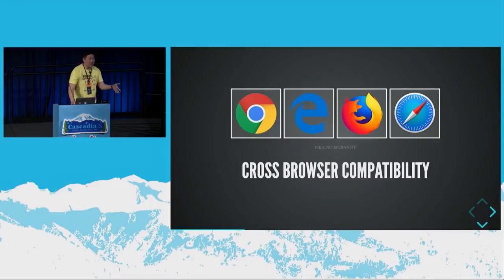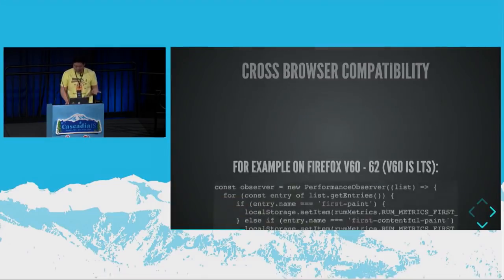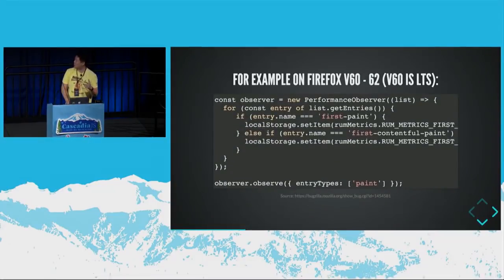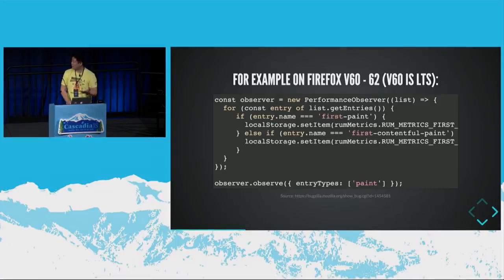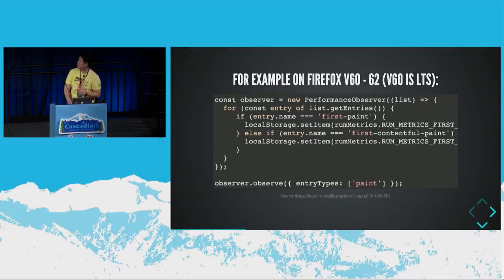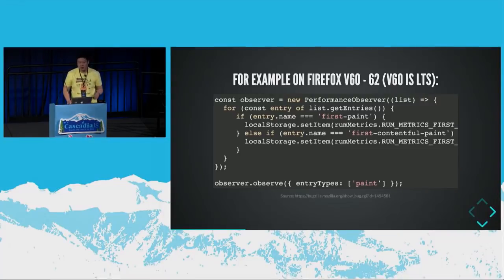You might say, well, these are evergreen browsers — they're all compliant, they all should work. But we faced this problem recently. We were trying to get our performance metrics working, and on Firefox version 60 to 62, the PerformanceObserver was throwing an error. They addressed it in version 63, but version 60 is actually long-term support. And in some corporate environments, not everyone has the latest version. So we have to really think about those users as we're building something at scale.